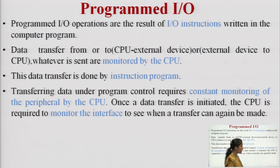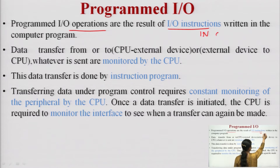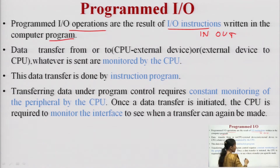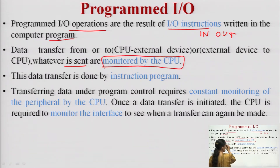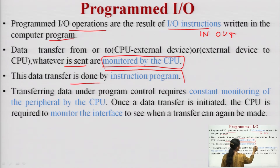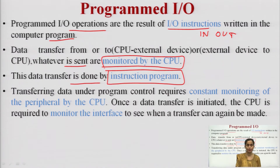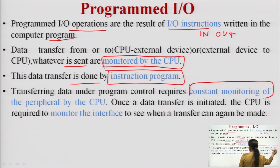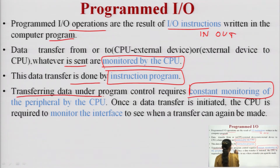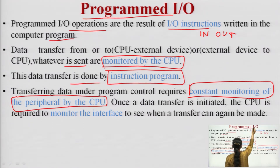Programmed input-output operations are the result of IO instructions like IN and OUT written in the computer program. The data transfer from CPU to external device or external device to CPU is continuously monitored by the CPU. This data transfer is done by executing instruction programs and the CPU continuously monitors it. Transferring data under program control requires constant monitoring of the peripheral by the CPU — that is the key characteristic of programmed IO.